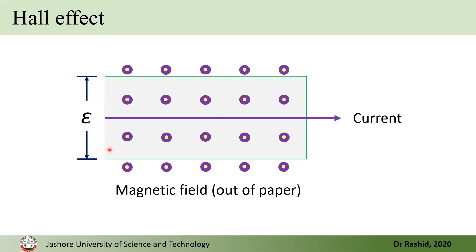Let's assume this is a slab of a material and the current is flowing in this direction, placed in a magnetic field whose direction is out of the paper. Then across this edge, a potential difference will develop. Today we will study how this potential actually develops and how we can calculate or determine its value.